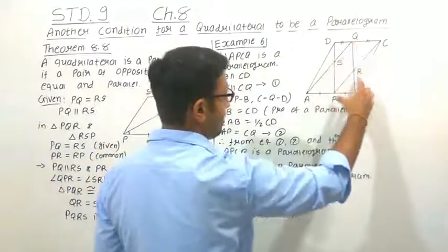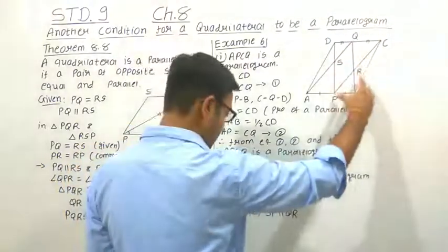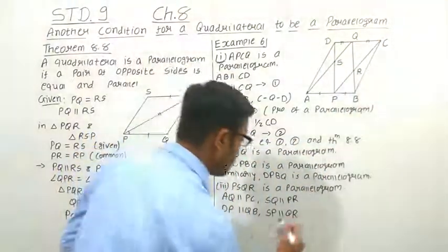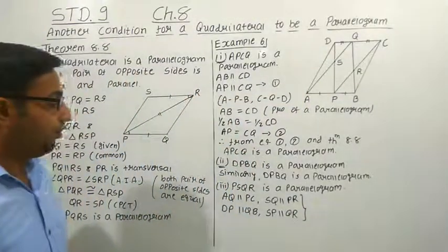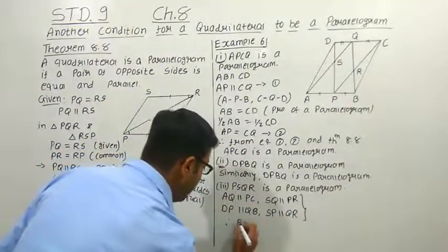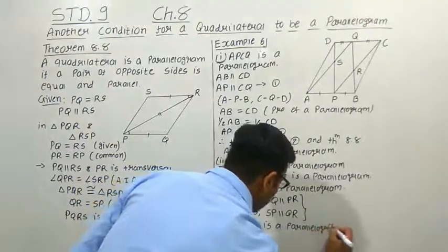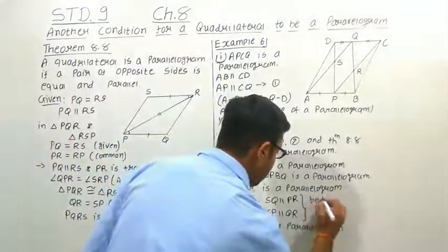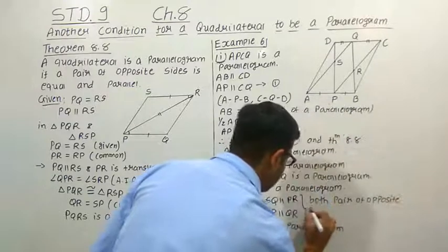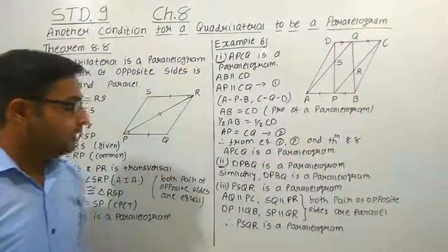SQ is parallel to PR and SP is parallel to QR. Both pairs of opposite sides of PSQR are parallel. Therefore, PSQR is a parallelogram. The reason is that both pairs of opposite sides are parallel, and therefore PSQR is a parallelogram.